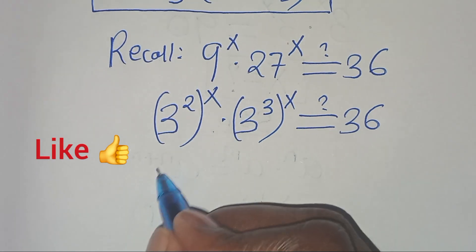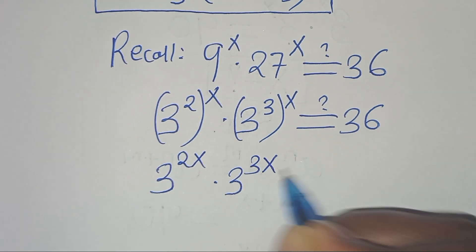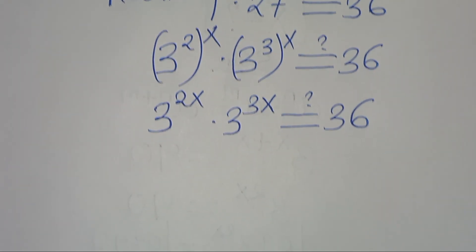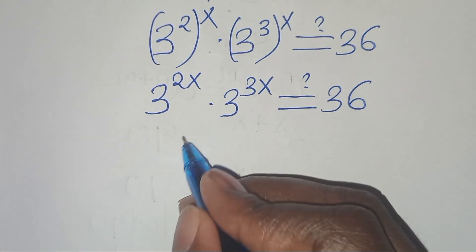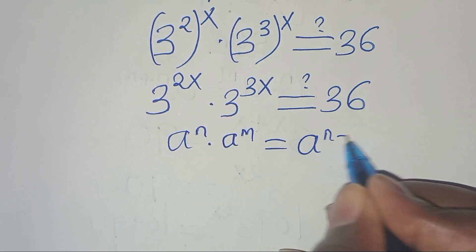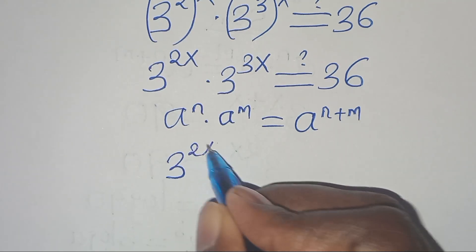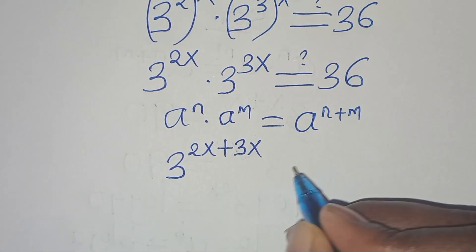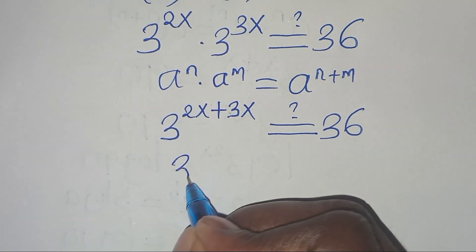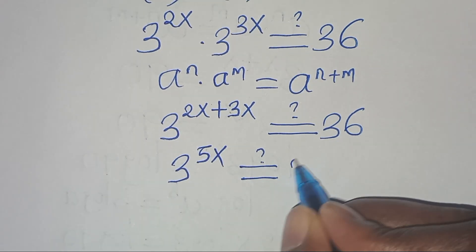So 3^(2x) times 3^(3x) — this is in the form a^n times a^m, which we express as a^(n+m). Therefore we have 3 to the power of 2x plus 3x, which equals 3 to the power of 5x, and this should give us 36.